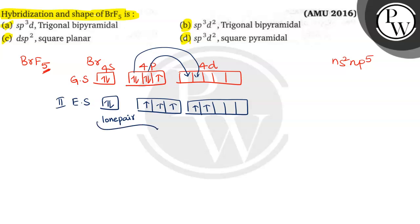Now, it undergoes SP3D2 hybridization by using its 4S orbital, three 4P orbitals and two 4D orbitals. So it utilizes and it involves in SP3D2 hybridization.